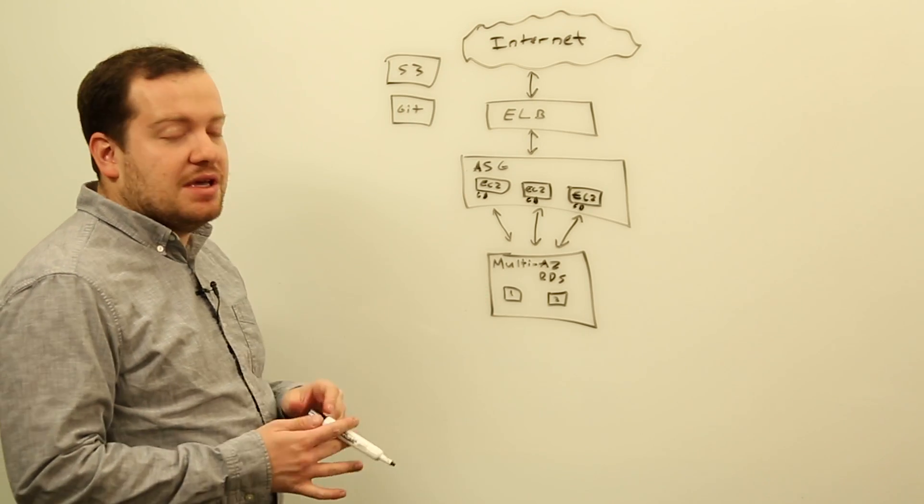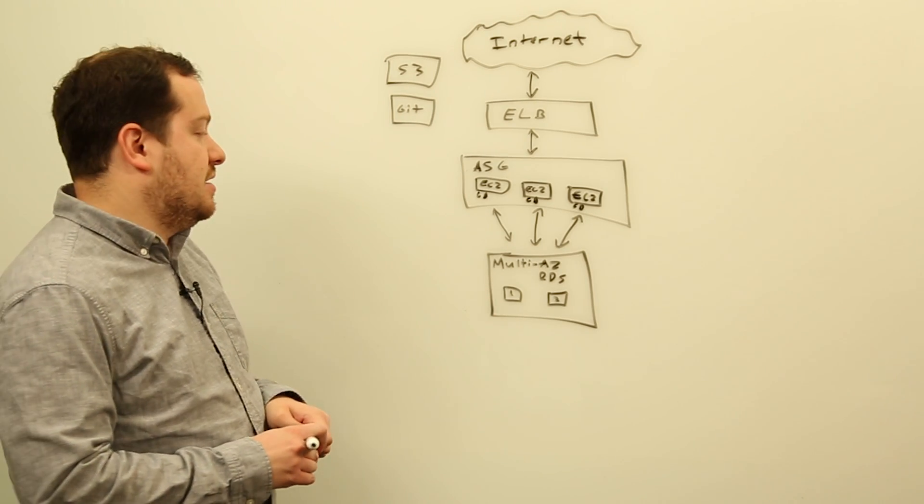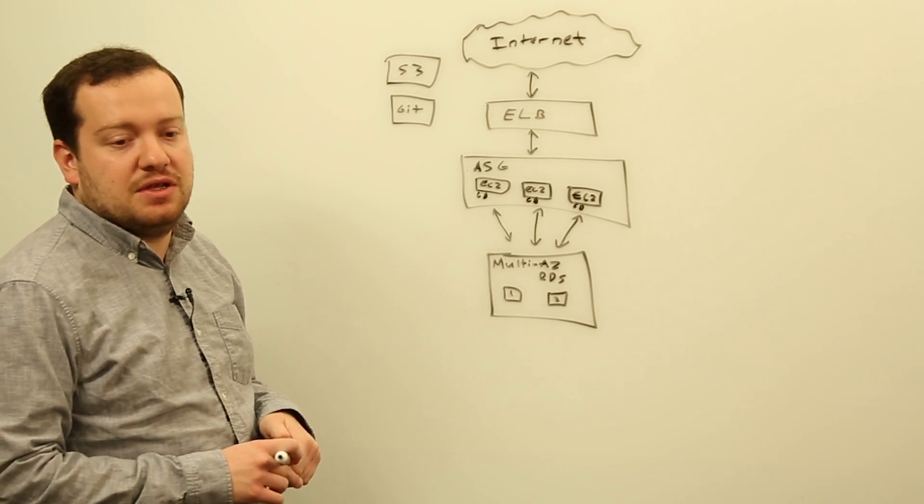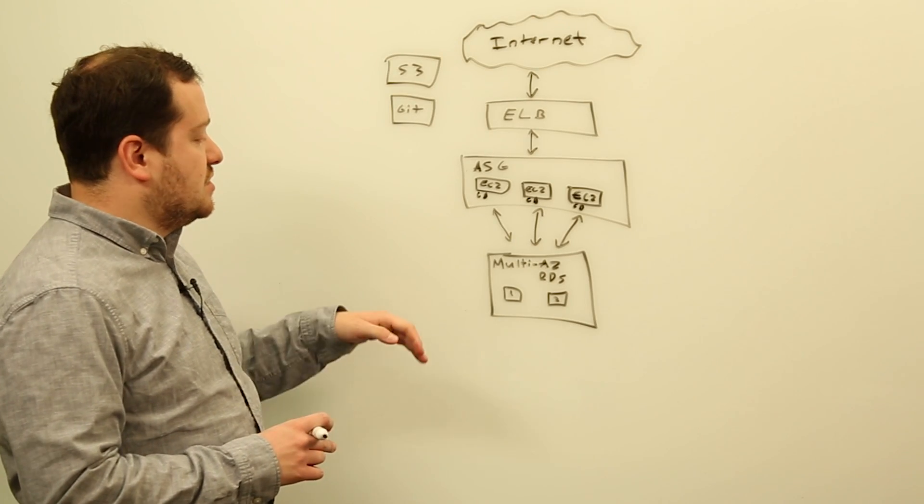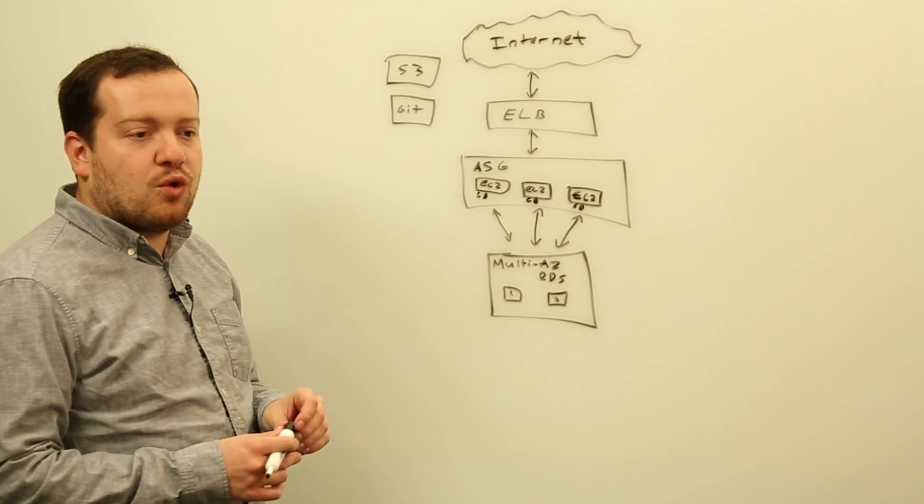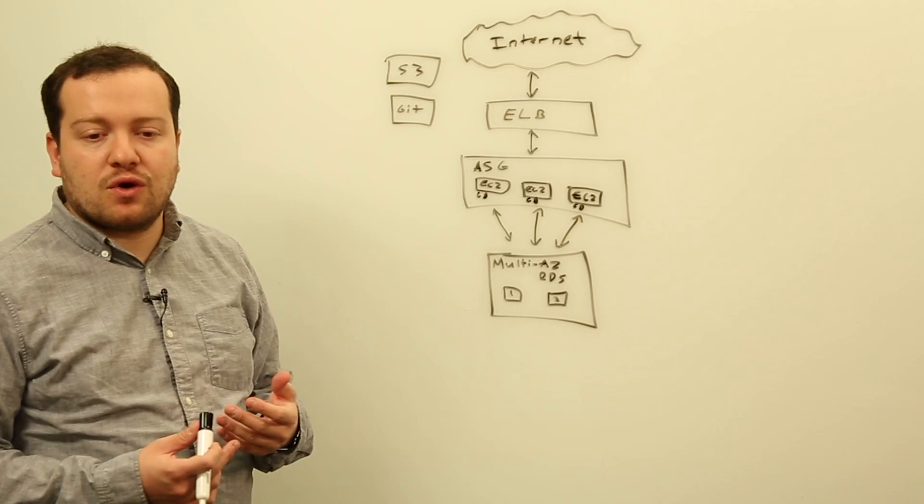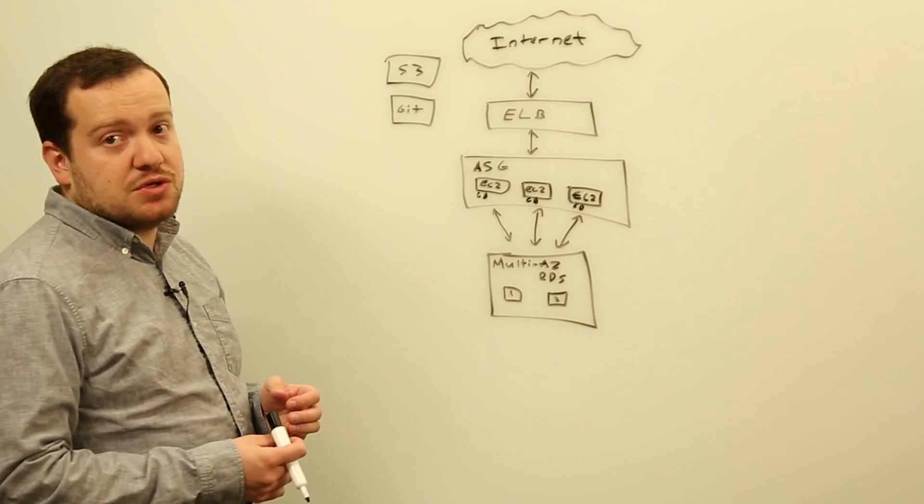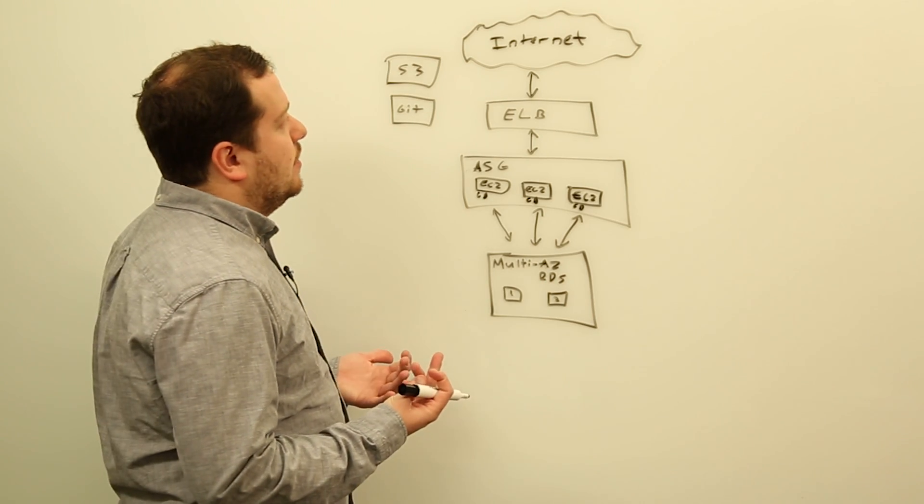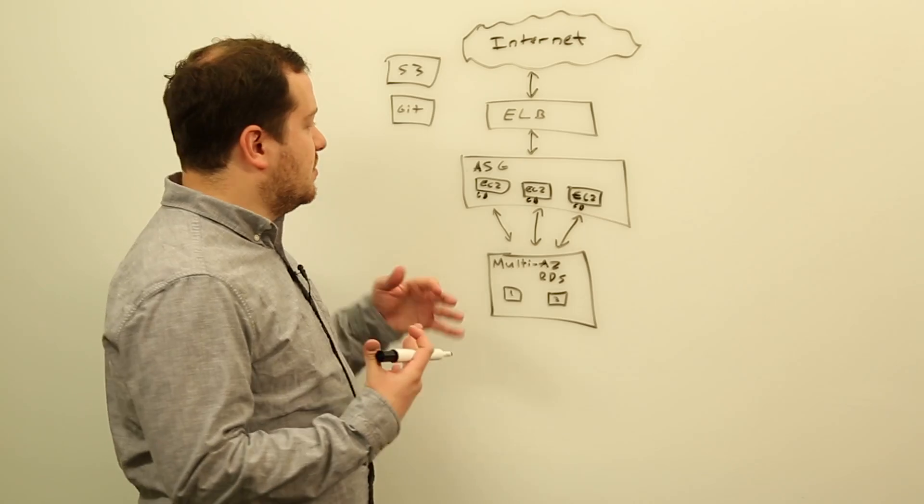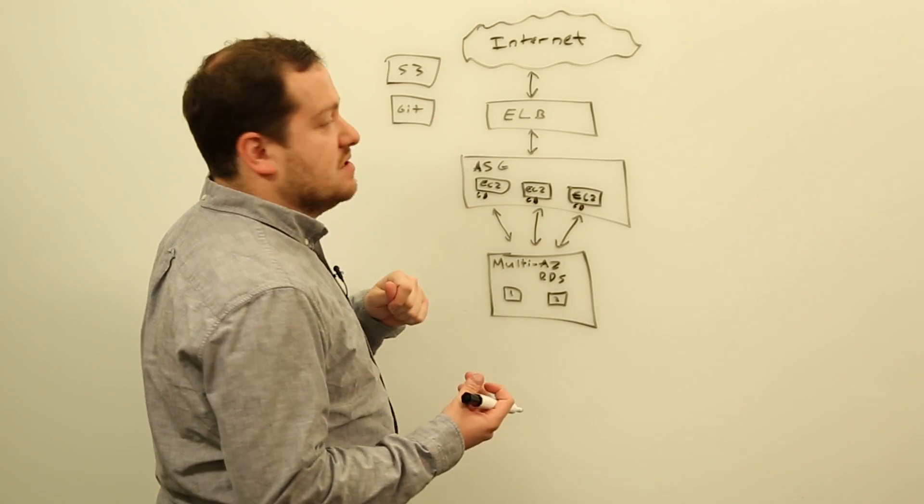And then there's going to be a Multi-AZ RDS database behind the EC2 instances. So that can be Oracle, Postgres, Aurora, MySQL, or SQL Server. It doesn't really matter in this example. So how do we actually deploy our code onto these instances here?